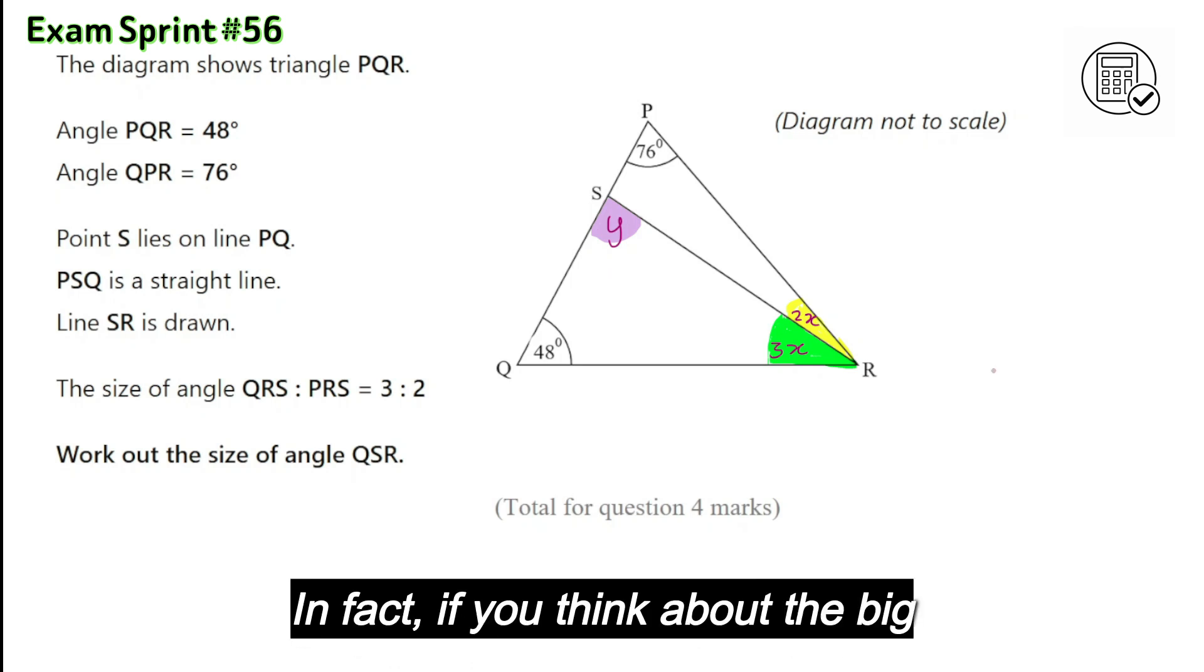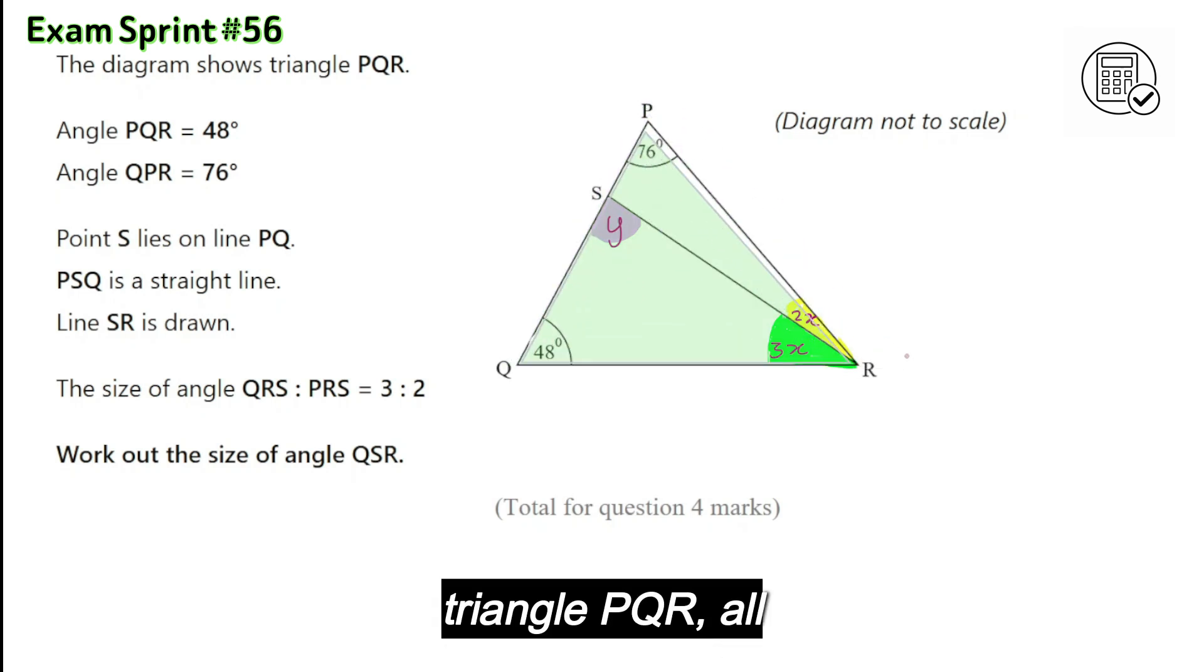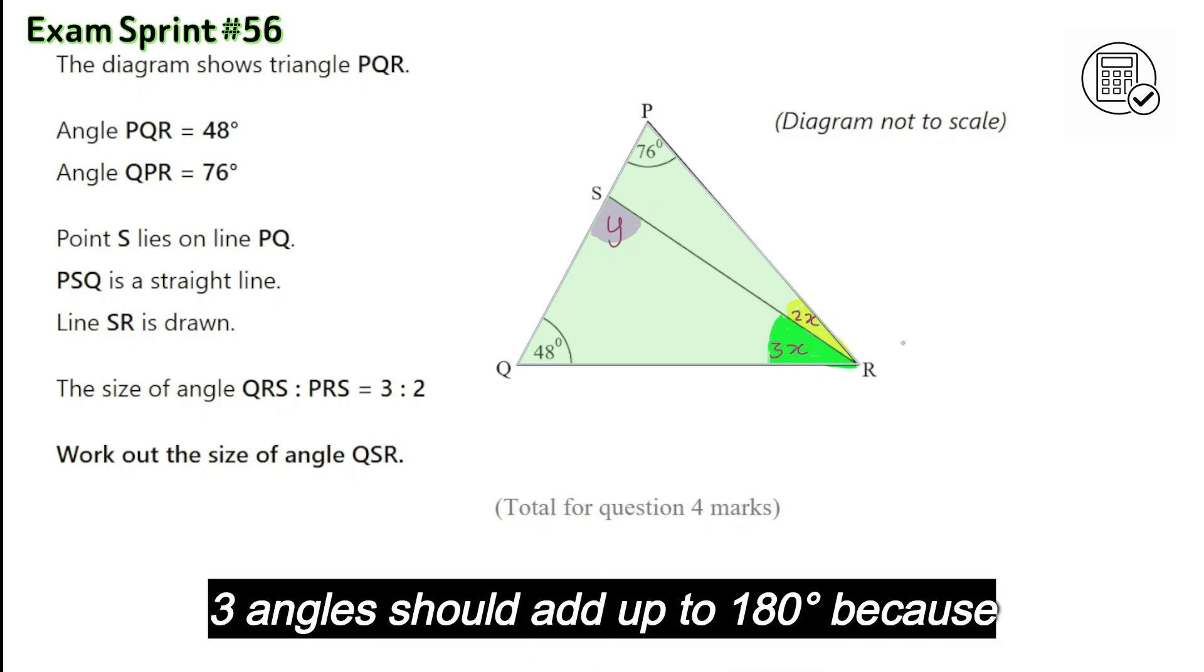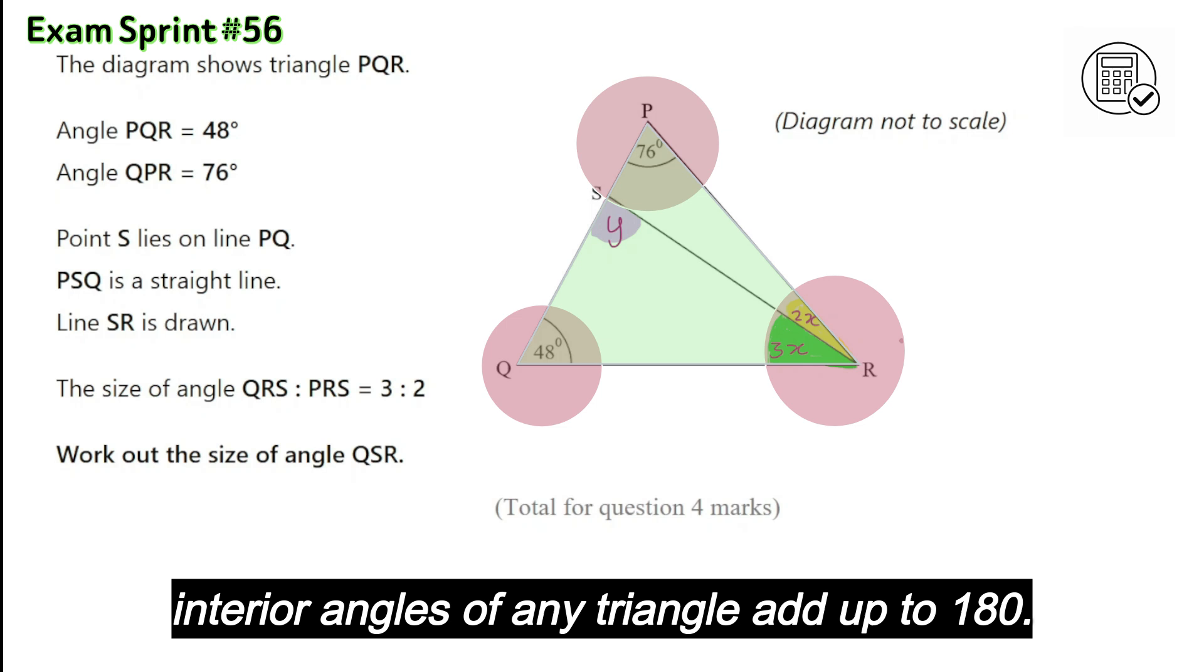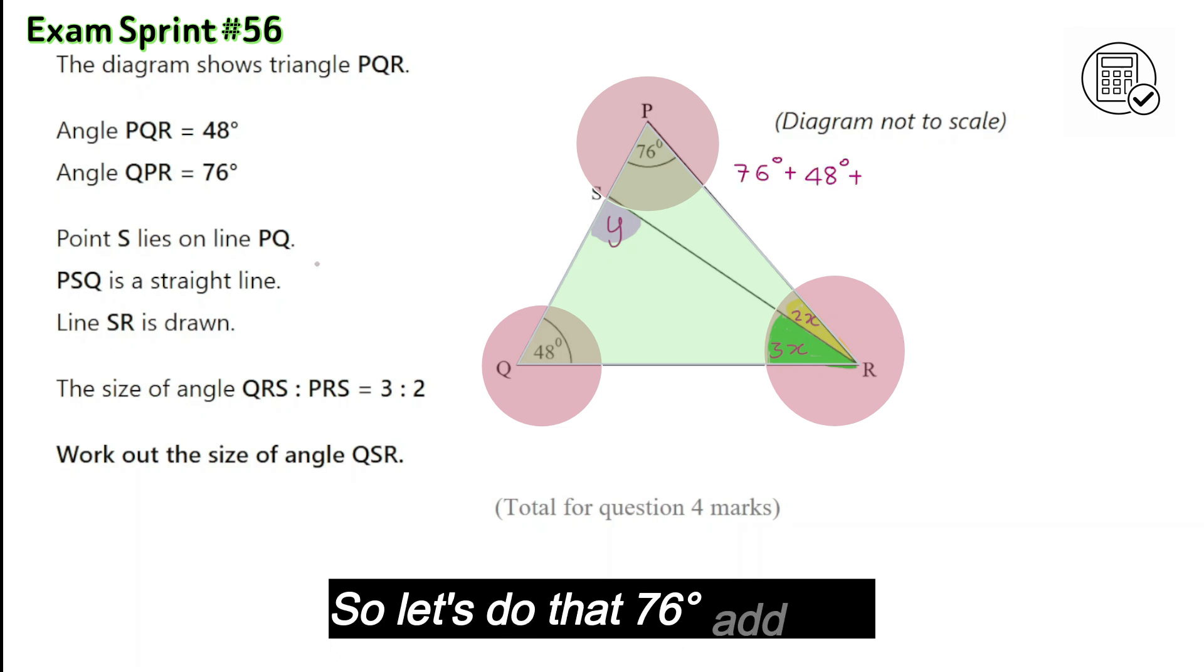In fact, if you think about the big triangle PQR, all three angles should add up to 180 degrees because interior angles of any triangle add up to 180. So let's do that.